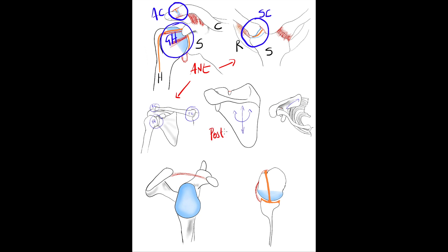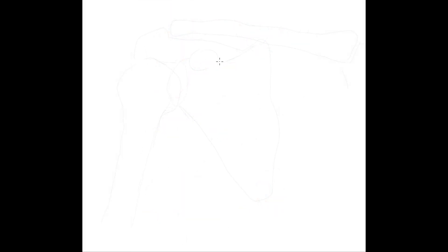We will progress gradually, starting with the most relevant structures of the osseous anatomy, then working through the cartilage, the synovial capsule, the fibrous capsule, and ending with the ligaments. We will start with the osseous architecture of the scapula in an anterior view.